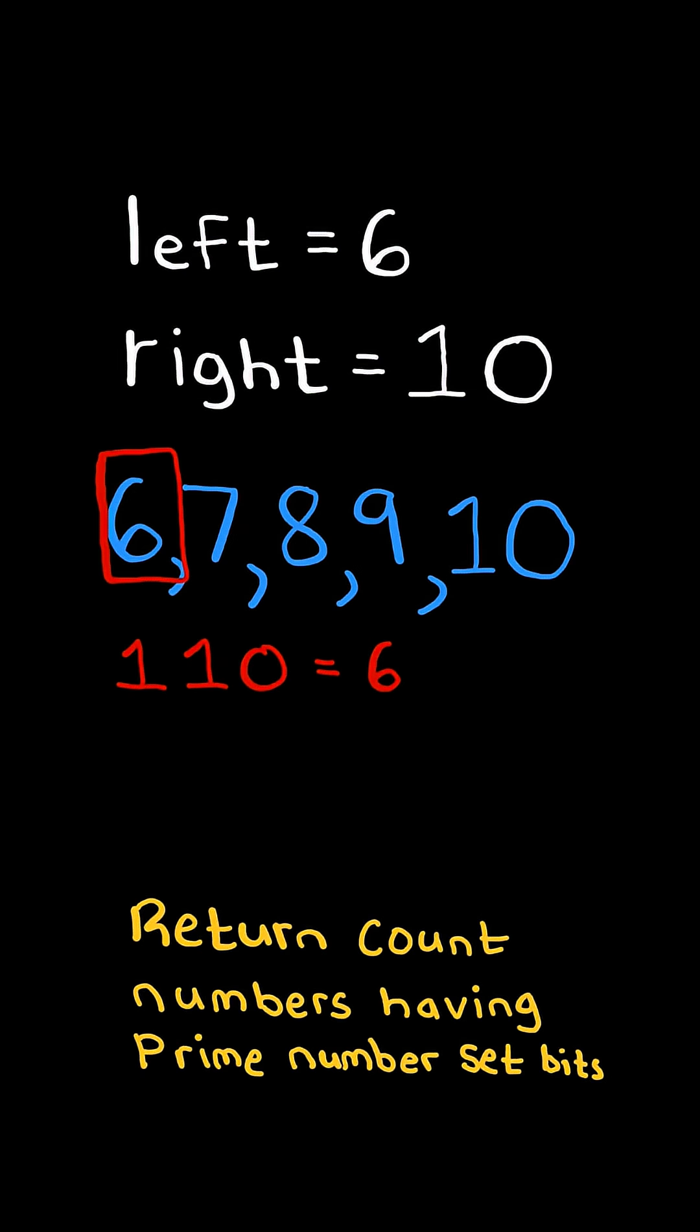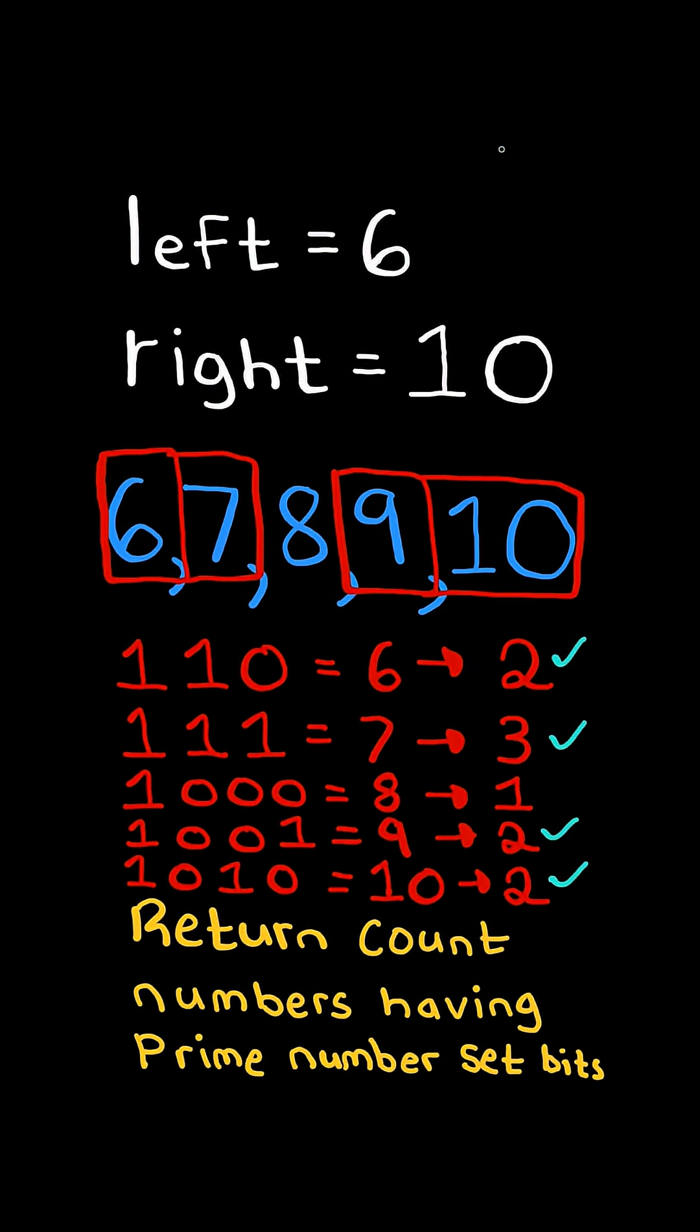For example, consider the binary representation of 6. It has two set bits, and 2 is a prime number. The other numbers that have a prime number of set bits are 7, 9, and 10.